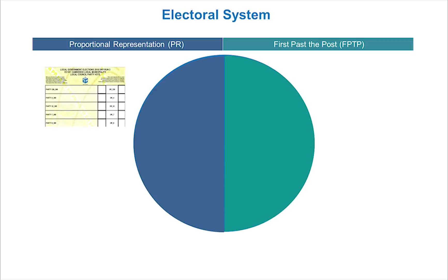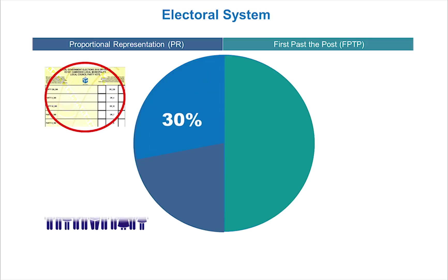Proportional representation means that parties are represented in proportion to the municipal councils. Voters vote for parties, not for individuals. This means that parties receive seat allocation in a municipal council according to the number of votes they receive.